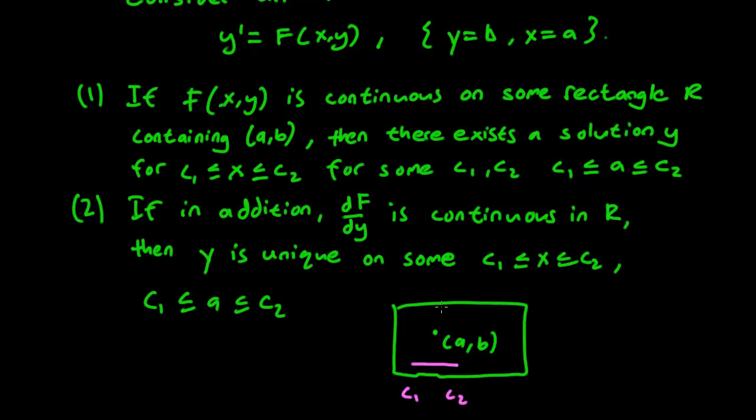And regardless, it might be possible that outside of this little interval between c1 and c2, that our solution stops existing or stops becoming unique. So this existence and uniqueness principle only applies for a small little area around the initial condition.